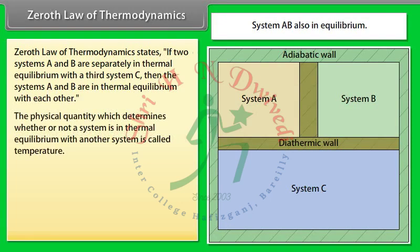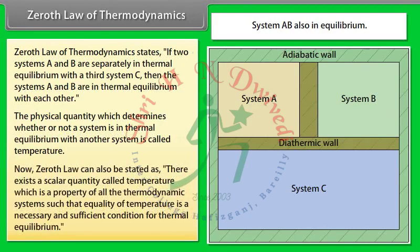The physical quantity which determines whether or not a system is in thermal equilibrium with another system is called temperature. The Zeroth Law can also be stated as: there exists a scalar quantity called temperature, which is a property of all thermodynamic systems, such that equality of temperature is a necessary and sufficient condition for thermal equilibrium.